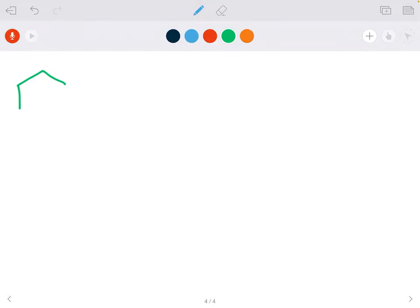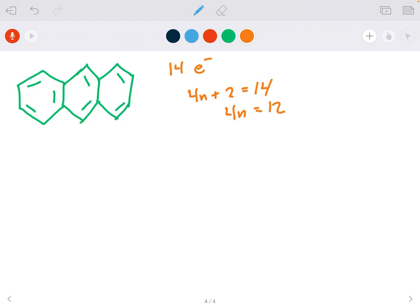So number one, we got anthracene here. This is a series of three benzene rings. All of these are conjugated. If you went through and drew the resonance structures for this, you would have all of these electrons as part of the conjugated pi system. So in this case, our number of aromatic electrons is equal to 2, 4, 6, 8, 10, 12, 14. So 4n plus 2 is equal to 14. 4n equals 12. That means n equals 3. So this one is aromatic.